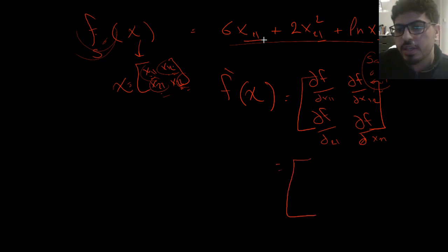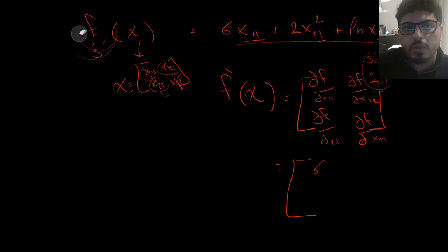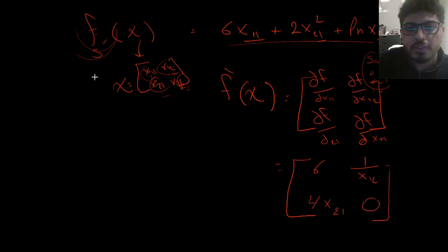Computing the values: ∂f/∂x11 = 6, ∂f/∂x12 = 1/x12, ∂f/∂x21 = 4x21, and ∂f/∂x22 = 0 because there is no x22 term in the function. So the gradient matrix is [[6, 1/x12], [4x21, 0]]. That was the third scenario.